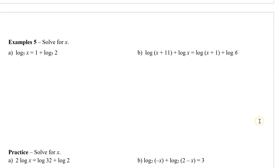So here, I've asked you to solve for x. In the first situation, we have two logs and a constant number. So we're going to move the logs to one side. This will be log x with a base of five minus log two with a base of five, and that equals one.